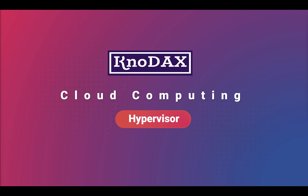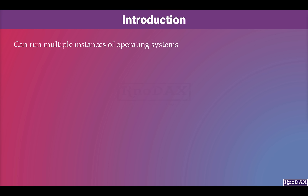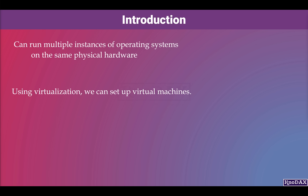Welcome back. In this lecture, we will learn about hypervisor, which is a go-to system between virtual machines and physical hardware. As we discussed, using virtualization, we can run multiple instances of operating systems on the same physical hardware. In other words, using virtualization, we can set up virtual machines.